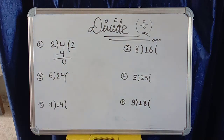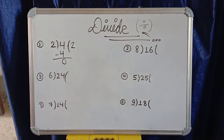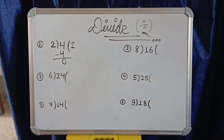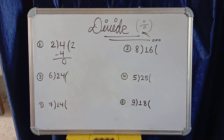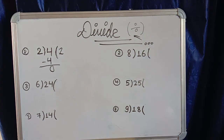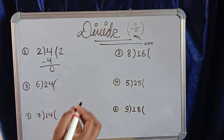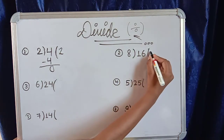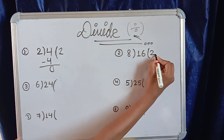Question number two is 8 divided by 16. We read the 8 times table: 8 ones are 8, 8 twos are 16. So the answer is 2. Here we write 2, and here we write 2, and here we write 16.